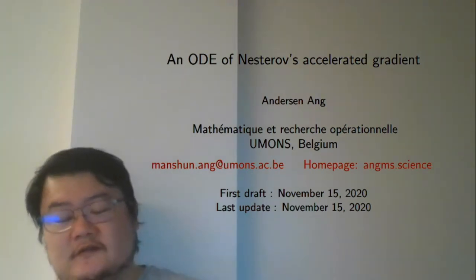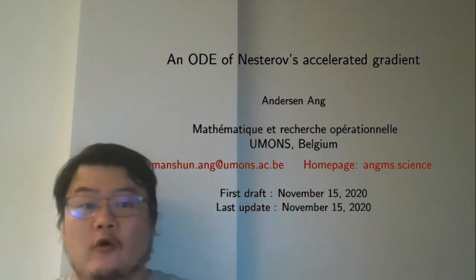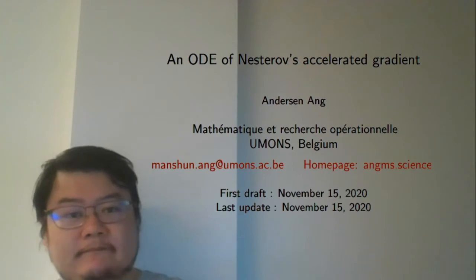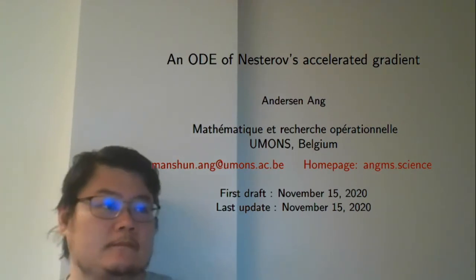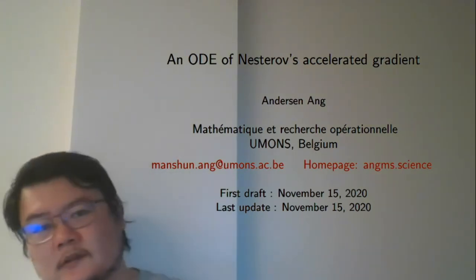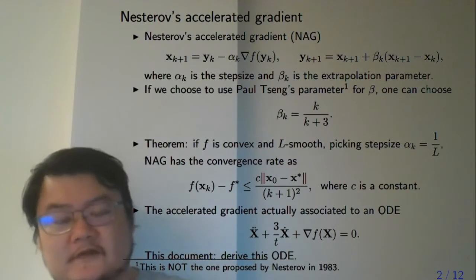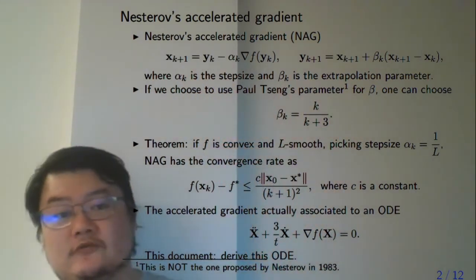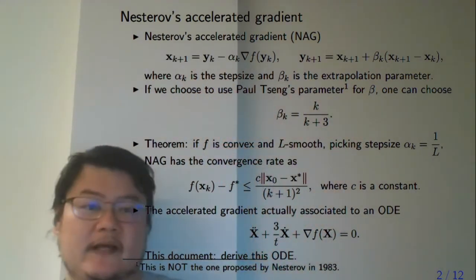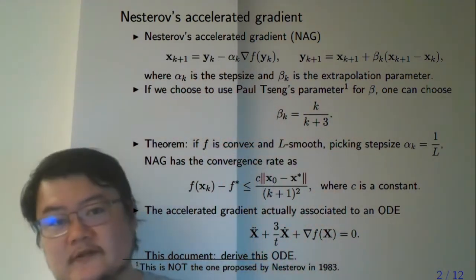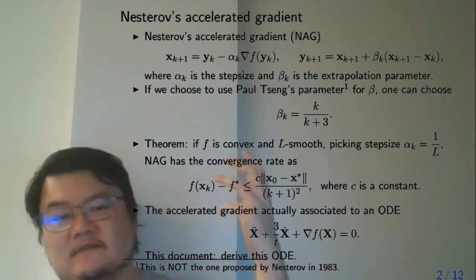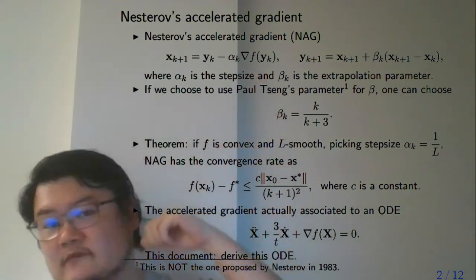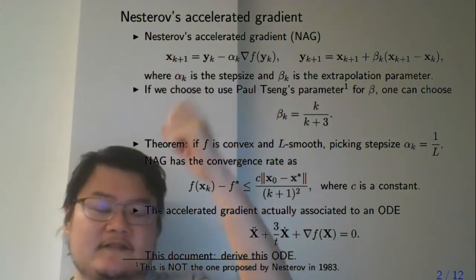This is a short video on deriving the ODE corresponding to Nesterov Accelerated Gradient. This is Nesterov Accelerated Gradient — it's a two-step extrapolated gradient update. You want to minimize function f with respect to variable x.